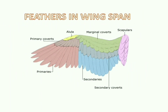Wings are the modification of forelimbs and are the chief organs of flight. Each wing is elongated, flattened, and distally pointed. It is extended only during flight. While at rest, it remains folded in the form of the letter Z. When extended, the wing shows three divisions: the upper arm, forearm, and hand. All these are closely bounded together by skin.